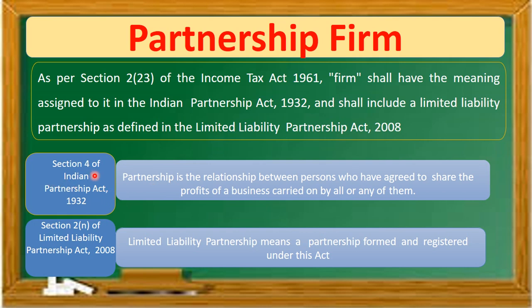Section 4 of the Indian Partnership Act 1932 says: partnership is the relationship between persons who have agreed to share the profits of a business carried on by all or any of them. So it is a relationship between persons.